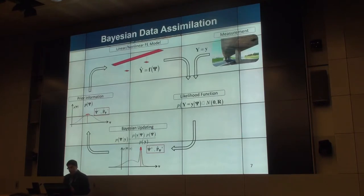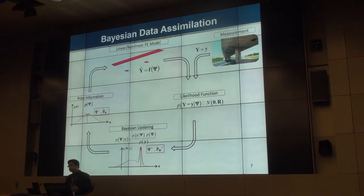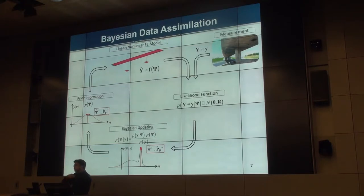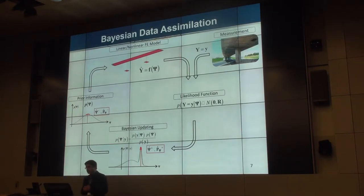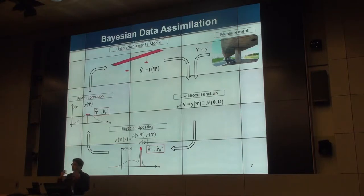The process we are pursuing is Bayesian model updating. The uncertainties in the parameters — including input and model parameters — are characterized by probability distribution functions. We propagate these probability distribution functions into our model, compare the resulting stochastic responses with measurements, and through a Bayesian inference process we update the probability distribution of our prior model parameters. It's a process of extracting information from data, and it is inherently iterative — as new data comes in, the iterative process continues.